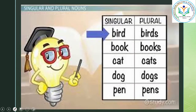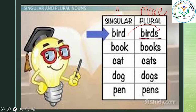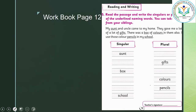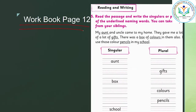We'll revise once again with very simple words. Singular is one; plural is more than one. So the word 'bird' becomes plural with an S: birds. Books, cats, dogs, pens. Now let's practice a little bit more on the workbook page, page number 12, and try to fill out what is required.